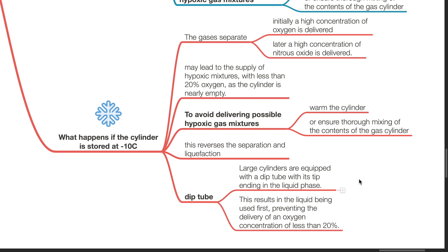Large Entonox cylinders are equipped with a deep tube with its tip ending in the liquid phase. This results in the liquid being used first, preventing the delivery of an oxygen concentration of less than 20%.